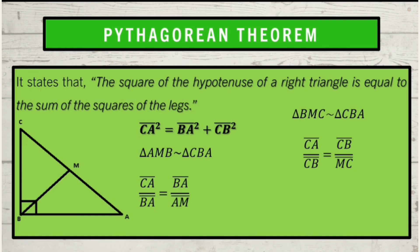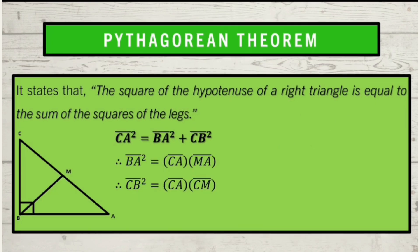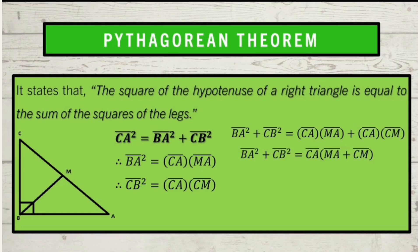Then, cross multiply the terms of the proportions. We will have BA squared is equal to side CA multiplied by side AM, and CB squared is equal to side CA multiplied by side CM. The reason is the cross multiplication property of proportions. The next step is adding the two legs and then substituting. By common monomial factoring, the common monomial factor is side CA.